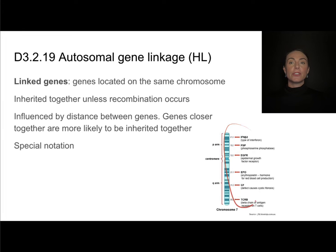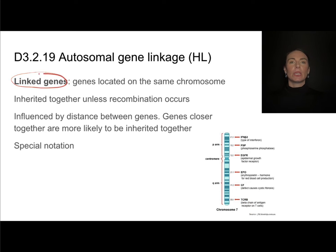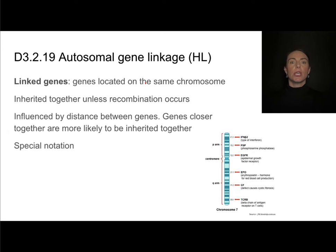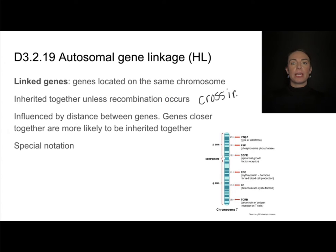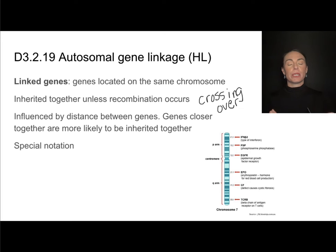Because all of these genes are found on the same chromosome, they are considered to be linked genes. Linked genes do not follow the law of independent assortment — they will be inherited together unless recombination occurs. Recombination is a result of crossing over, and that happens in prophase one of meiosis. Unless crossing over occurs and these alleles are reshuffled, they will be inherited together.